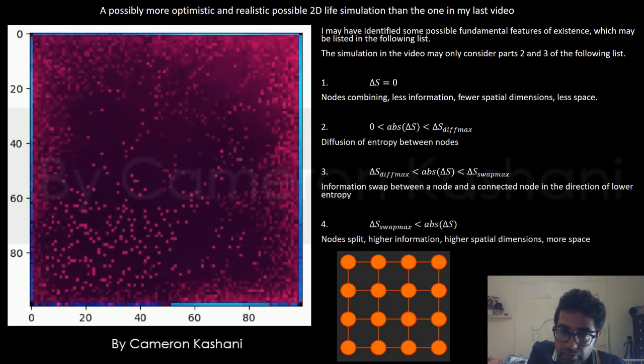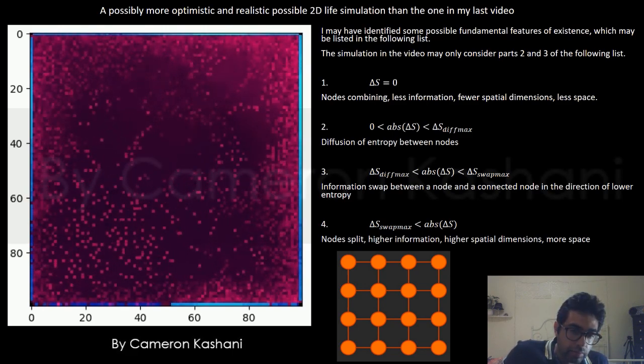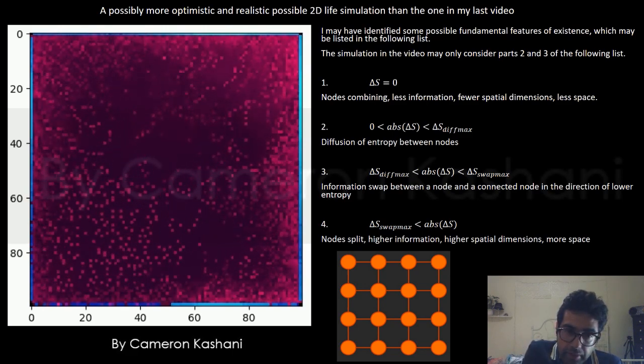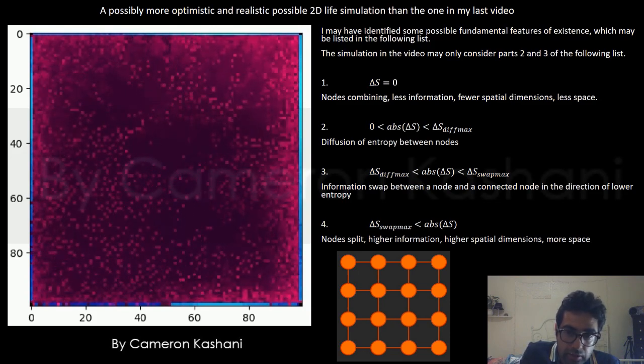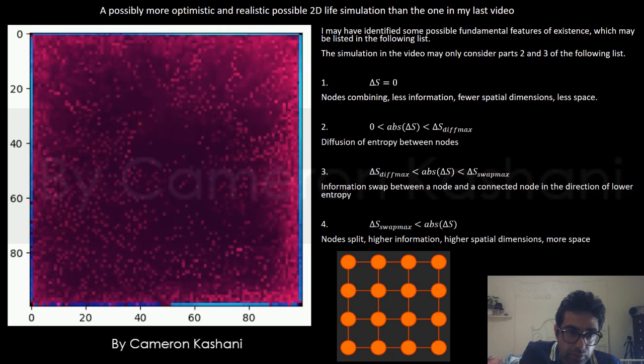And in part 4, above an upper threshold, nodes may split resulting in higher information, a higher number of spatial dimensions, and possibly more space.